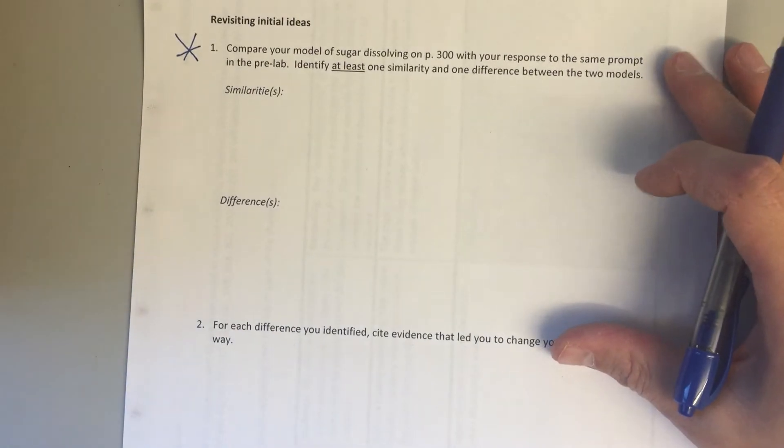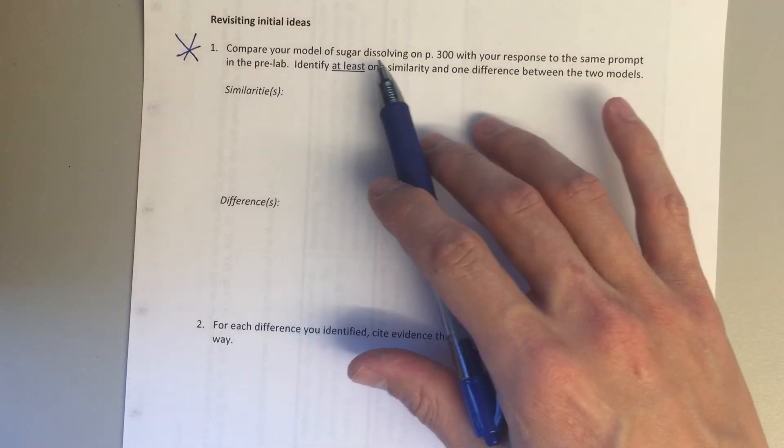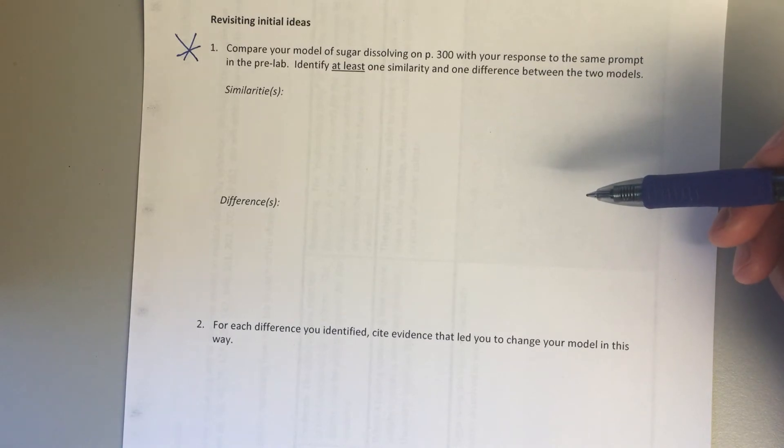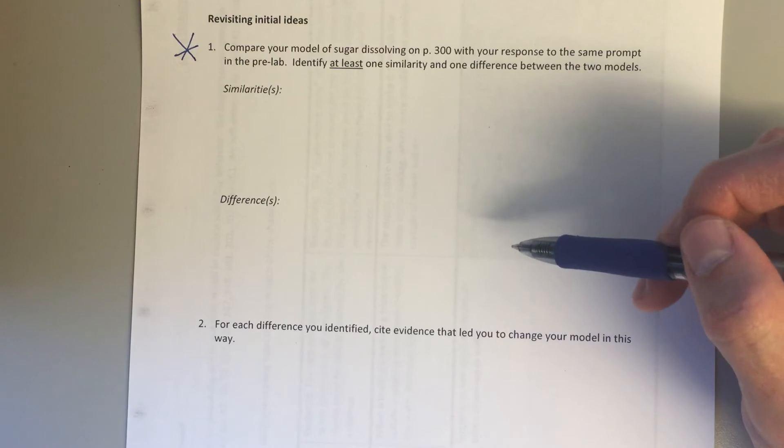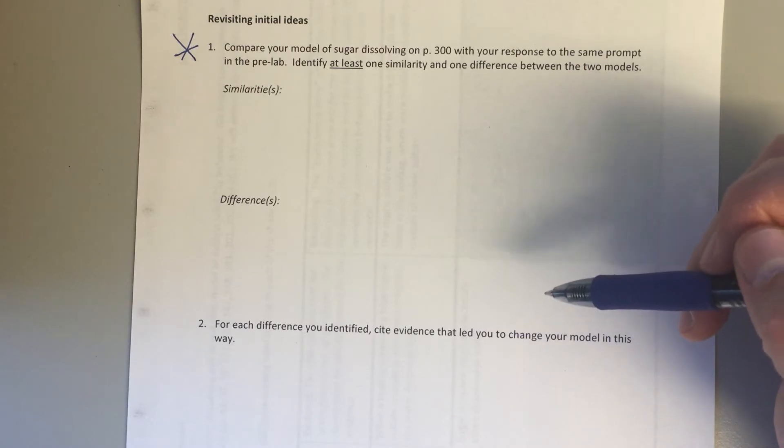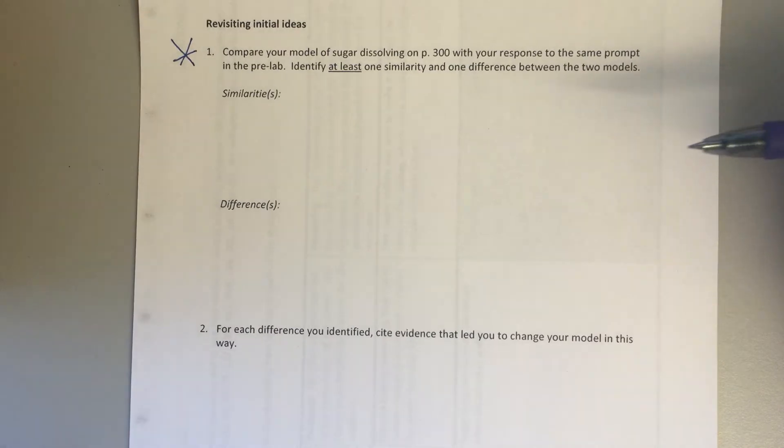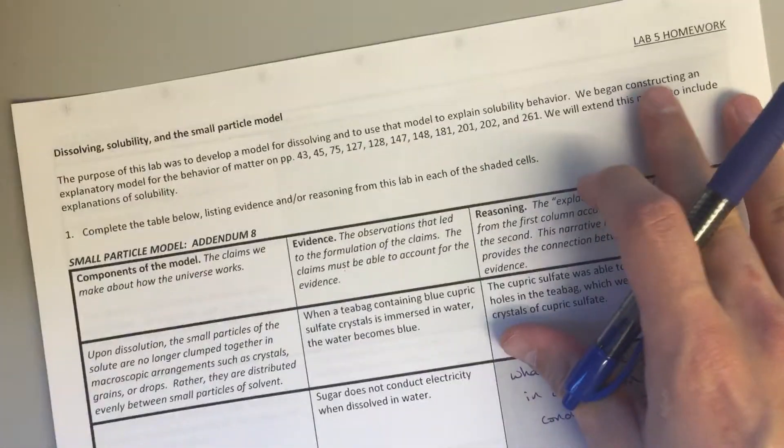Revisiting initial ideas is the next section. Here we're going to compare our model of sugar from the pre-lab to the way that we imagine sugar dissolving now. If there's no differences, that's okay, you can write that, but try to find your similarities, find your differences, and definitely write those out.